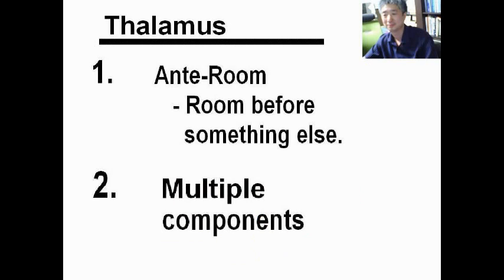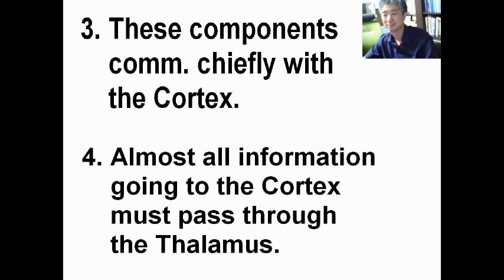Now, the thalamus is the anteroom. It's the room before something else. It consists of multiple components. These components communicate reciprocally with the cortex. Almost all information going to the cortex goes through the thalamus.